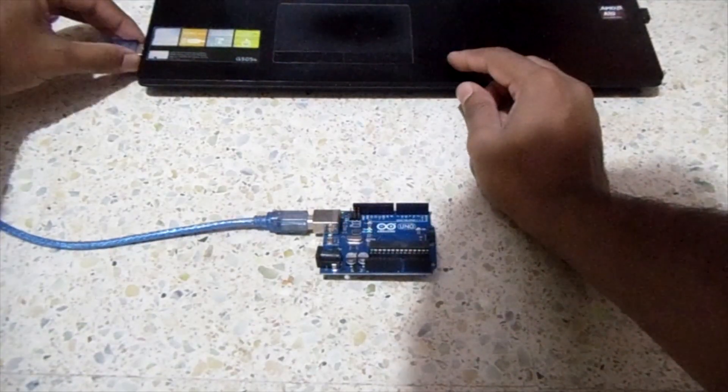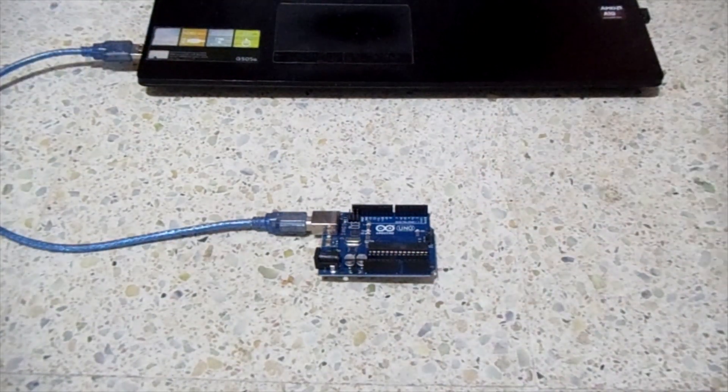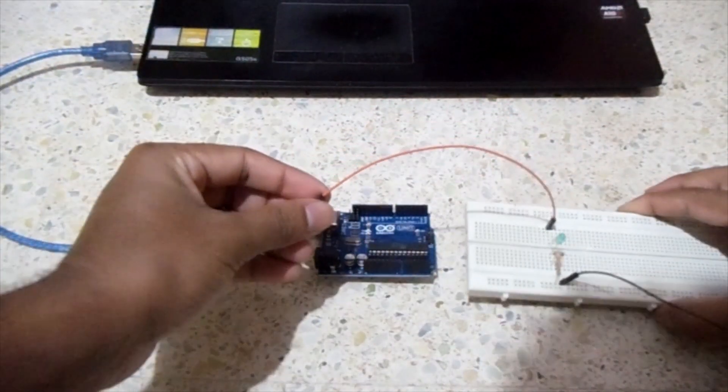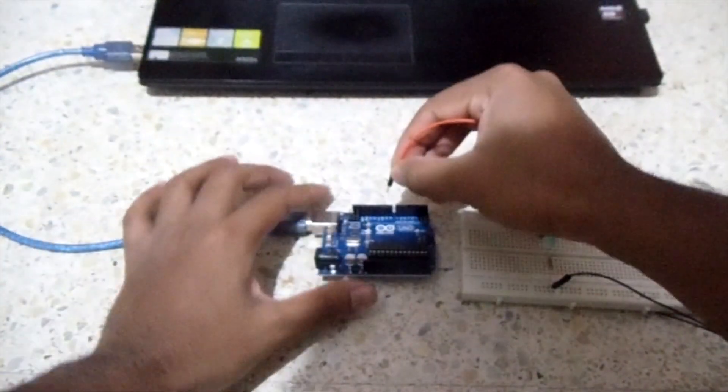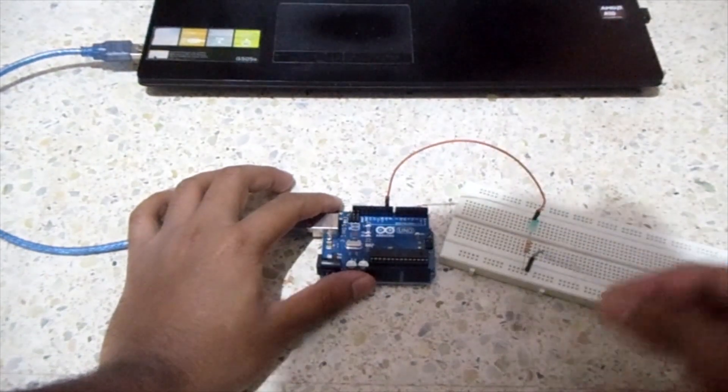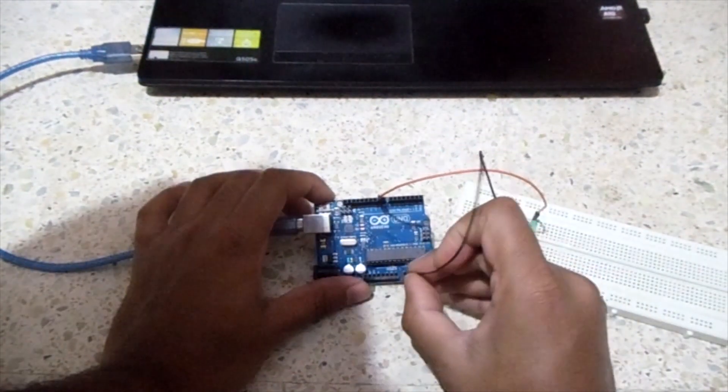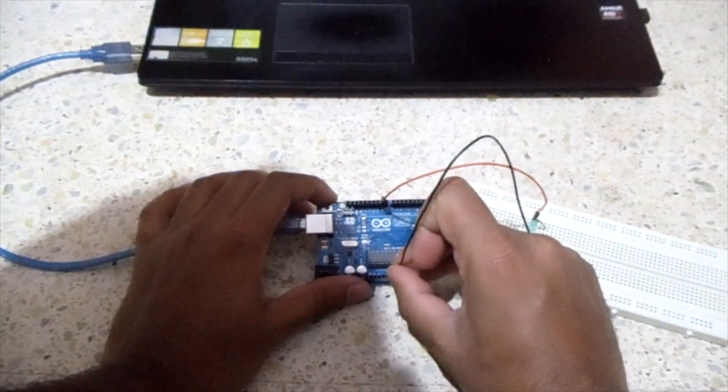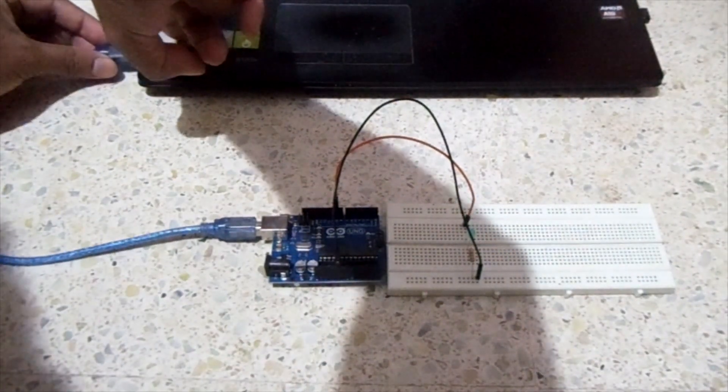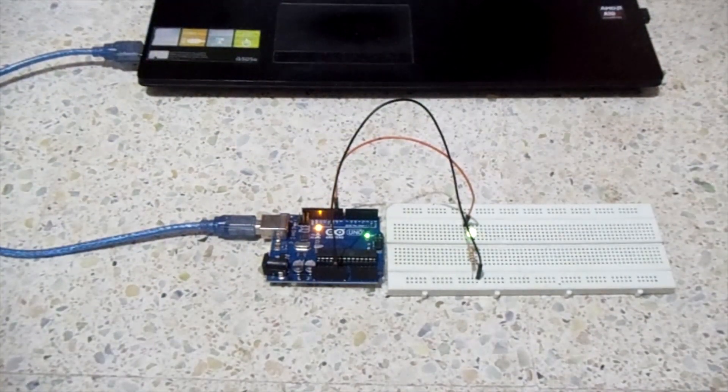To test if the upload was successful, connect LED and resistor to pin number 9. The anode of the LED goes to pin number 9 and the ground goes to free end of resistor. If the LED blinks slowly, then your upload is successful.